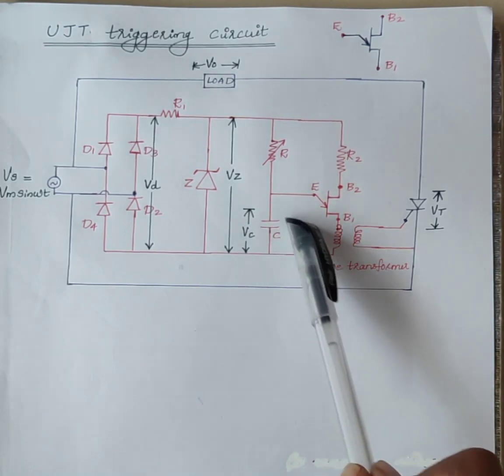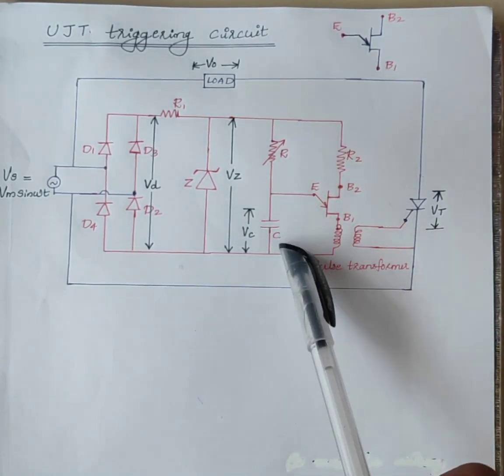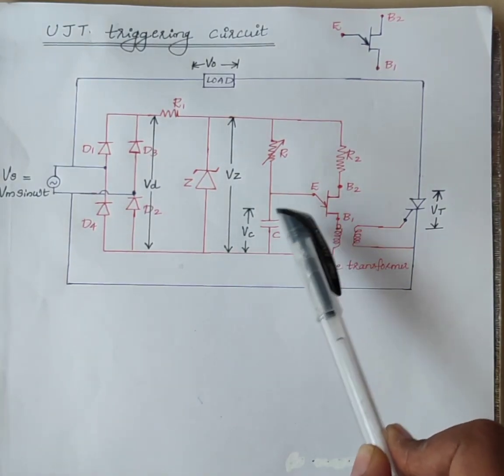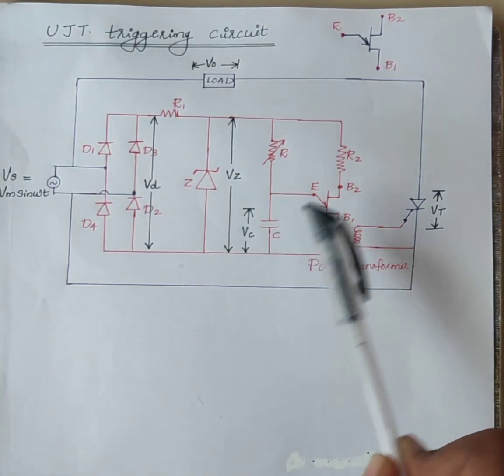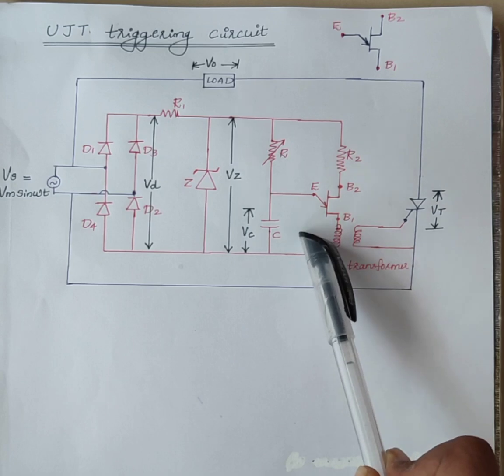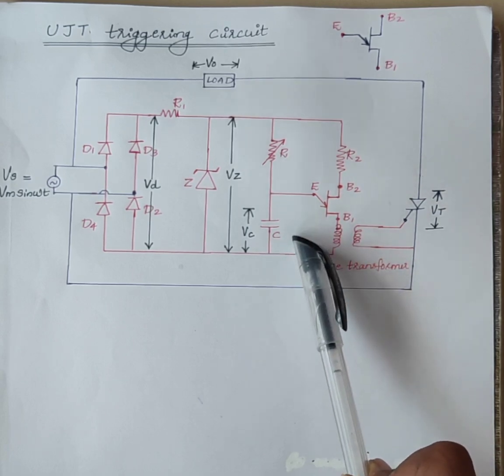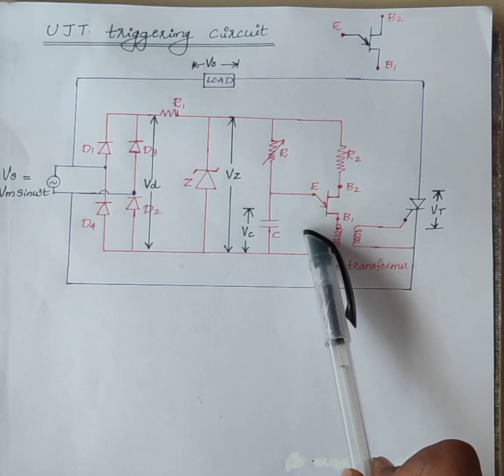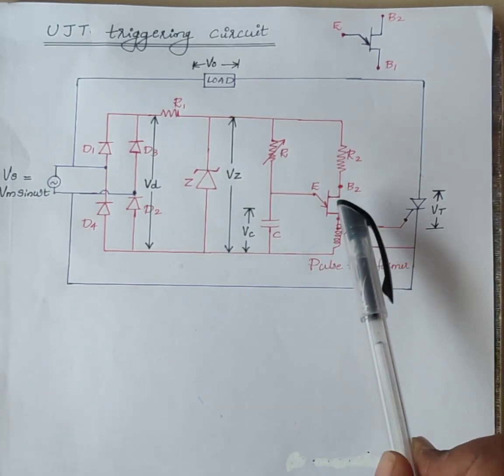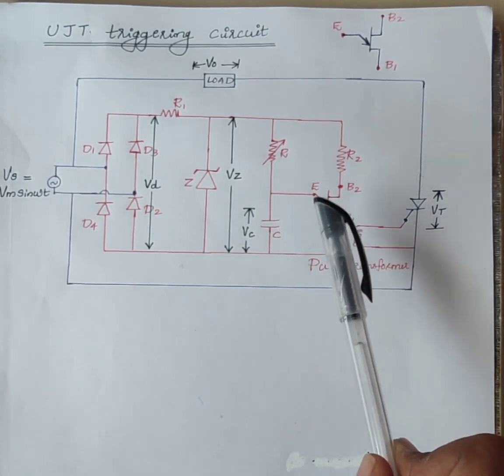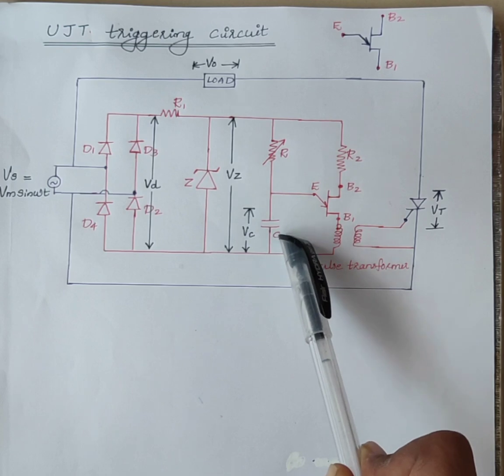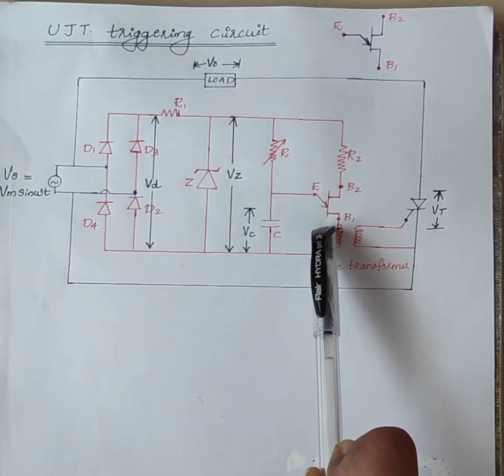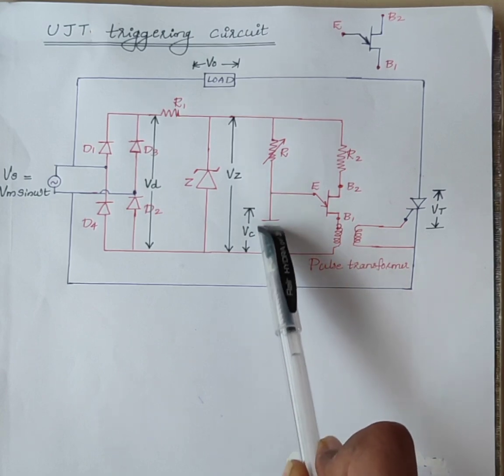The capacitor C charges through the resistor. When the voltage across the capacitor reaches the UJT triggering voltage, Vp, the peak voltage of the UJT, the UJT turns on. At this instant, the capacitor C discharges through emitter base 1 primary of pulse transformer.